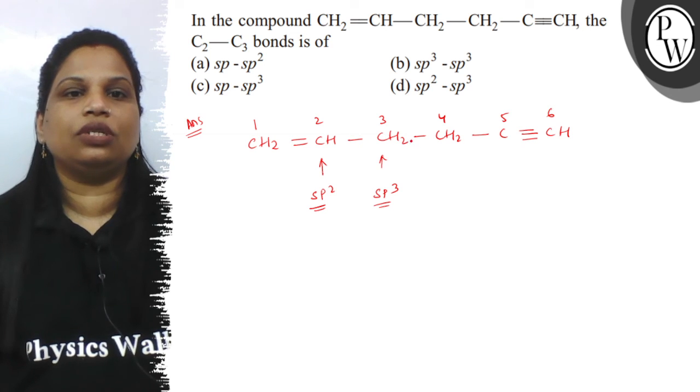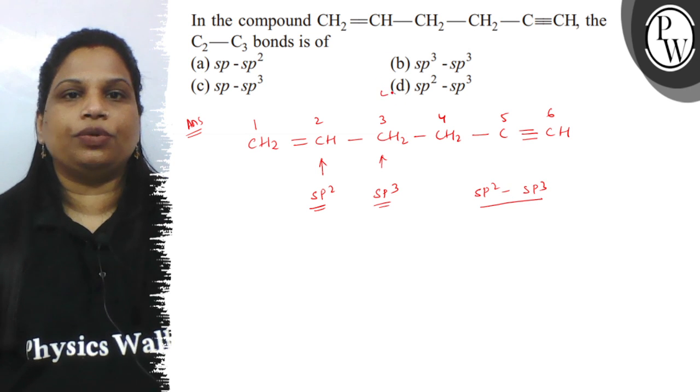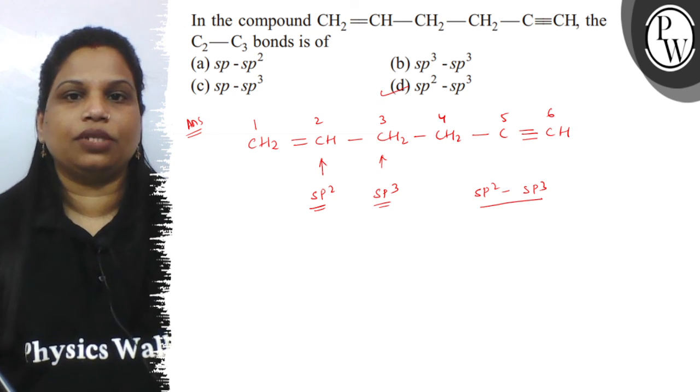So the hybridization of C2-C3 is SP2-SP3. Your correct option is option D. I hope you understood well. Best of luck.